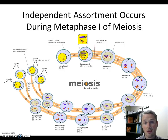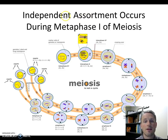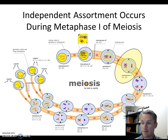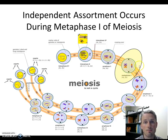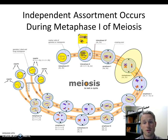We've talked about crossing over being important for genetic differences, and today we're considering independent assortment. Independent assortment is a feature of meiosis that occurs during metaphase 1, when homologous chromosome pairs line up on the metaphase plate. Then during anaphase 1, those homologous chromosome pairs separate, with one homologous chromosome heading to each side of the cell.